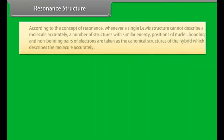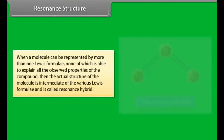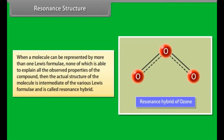Resonance structure. According to the concept of resonance, whenever a single Lewis structure cannot describe a molecule accurately, a number of structures with similar energy, positions of nuclei, bonding and non-bonding pairs of electrons are taken as the canonical structures of the hybrid which describes the molecule accurately. When a molecule can be represented by more than one Lewis formula, none of which is able to explain all the observed properties, the actual structure is intermediate of the various Lewis formulae and is called the resonance hybrid.